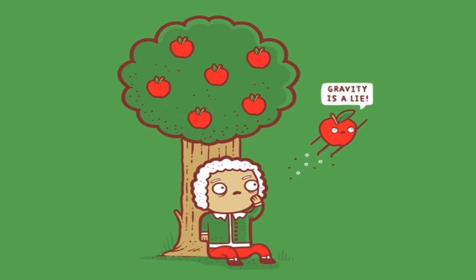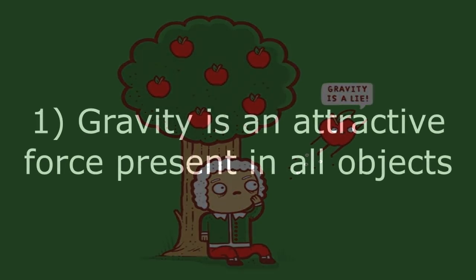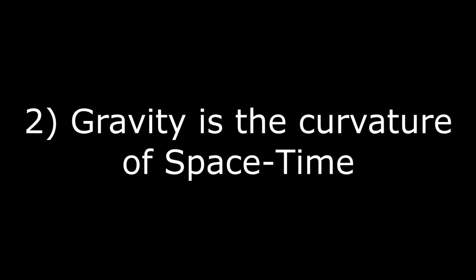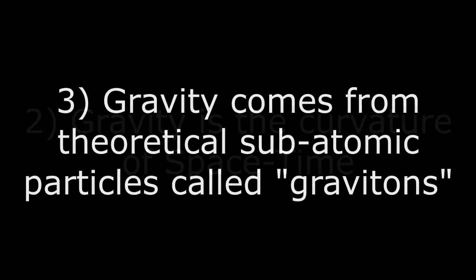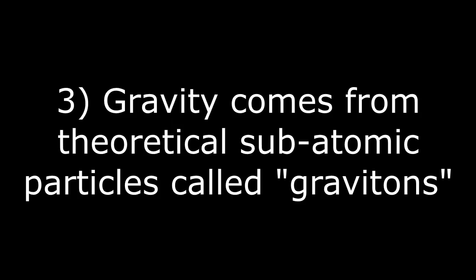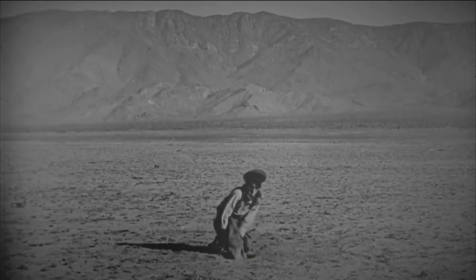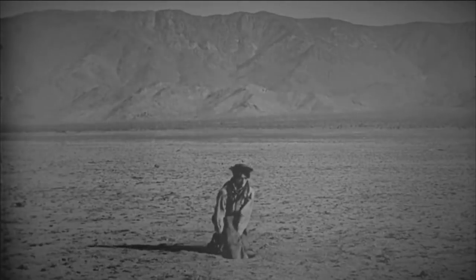Since its conception, the theory of gravity has been described in three distinct ways: first by Newton as an inherent property of all matter, making all matter attracted to all other matter; then later by Einstein as the curvature of spacetime; and then finally by quantum theorists as hypothesized subatomic particles called gravitons. If gravity was actually an inherent property of all matter, do you think if you threw a handful of marbles in space, all the marbles would start orbiting each other and stick to one another?